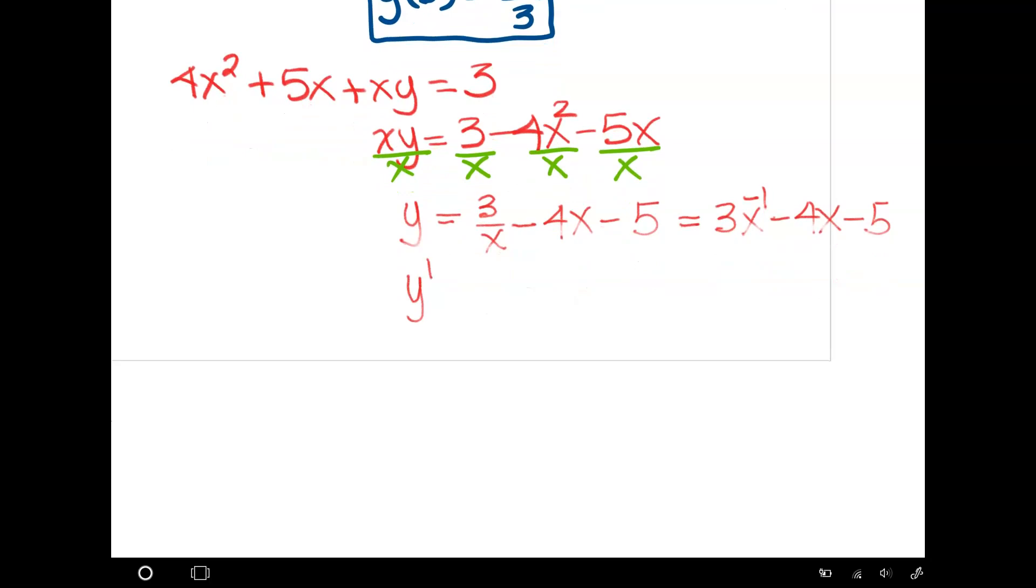So my derivative, now I don't need implicit differentiation, just do my regular. So -1 times 3 is -3x^(-2) - 4, and the derivative of -5 is 0. So let's write that derivative as -3/x² - 4.